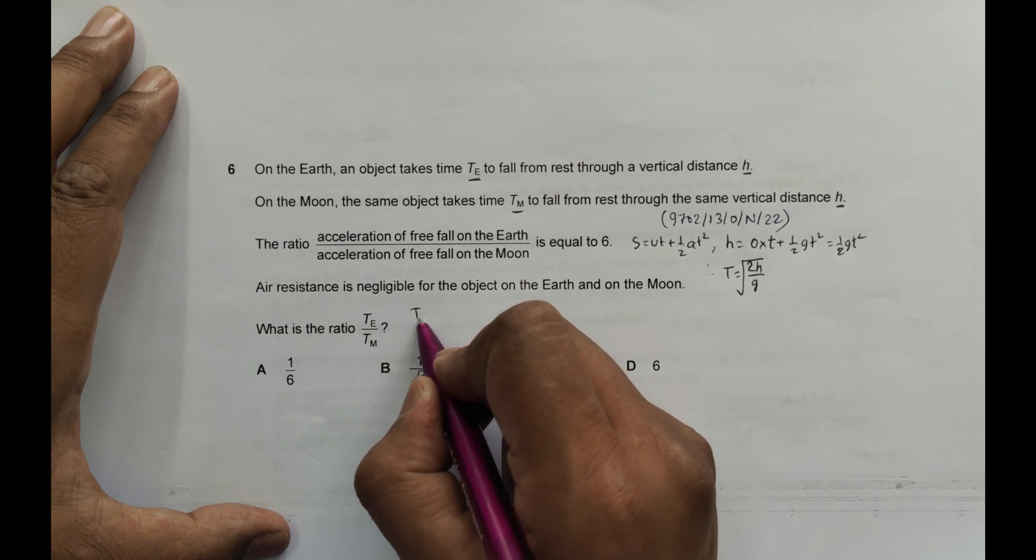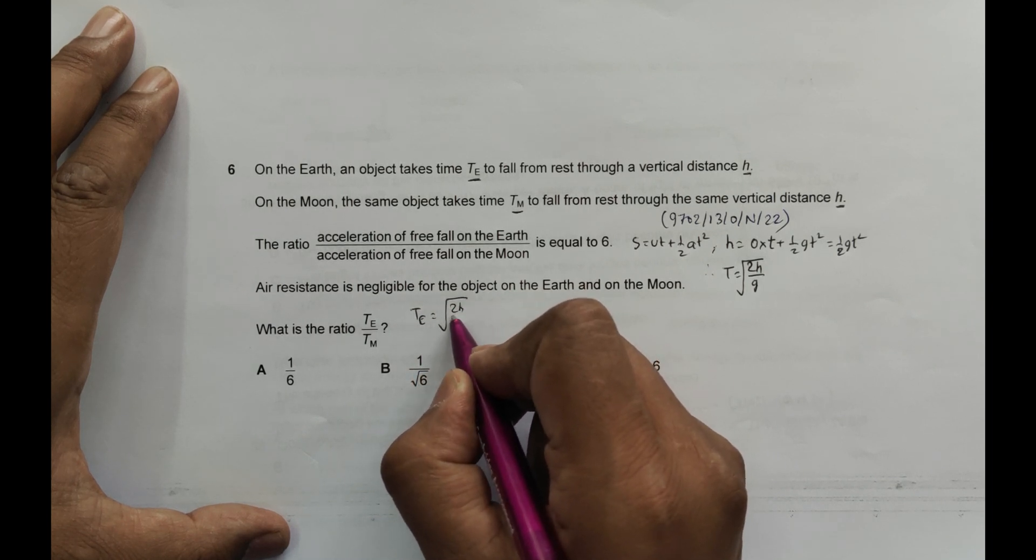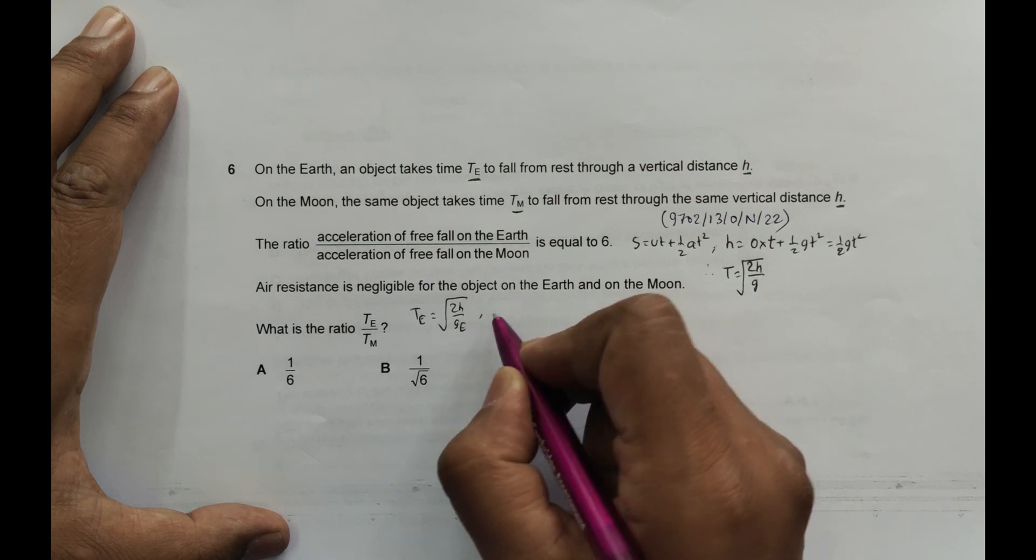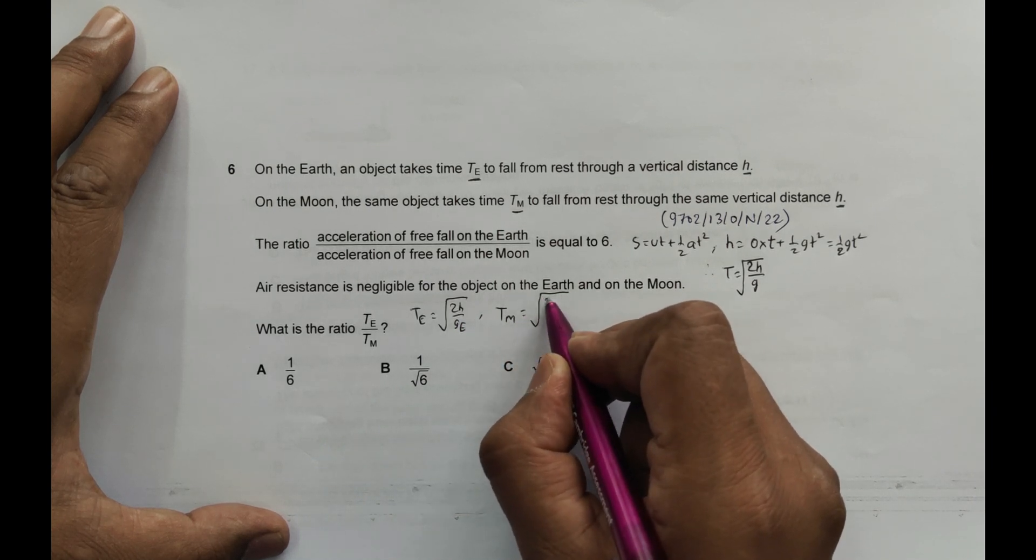So we have for Earth, Te is equal to the square root of 2h by ge. Tm is equal to the square root of 2h by gm.